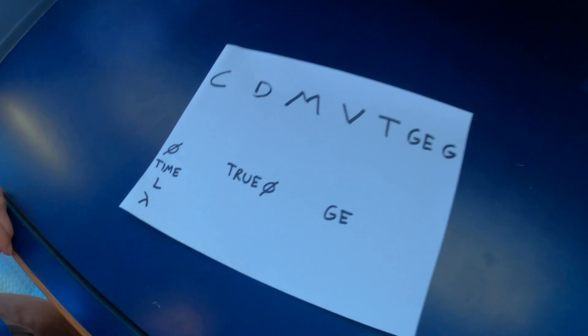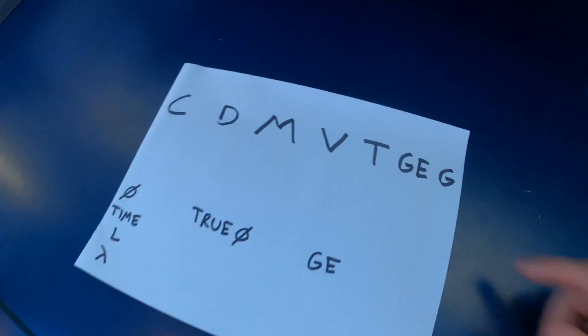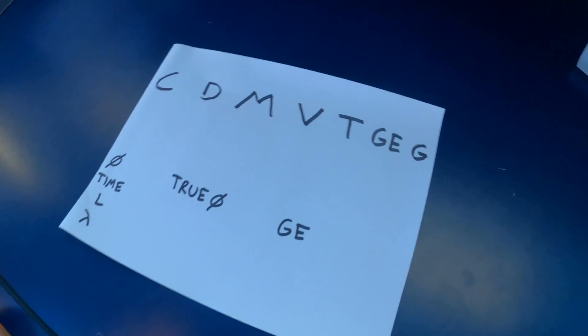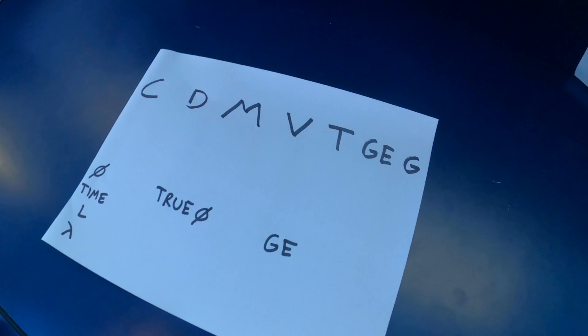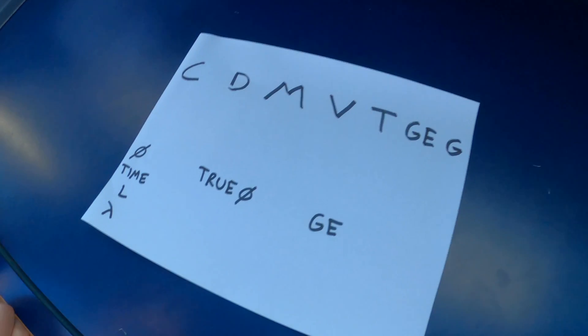Now using a mnemonic device, CAN dead men vote twice gyro error gyro, we're going to plug in a bunch of variables here in order to determine what the gyro error is, what the compass error is, as well as what the actual true course we're steering is.